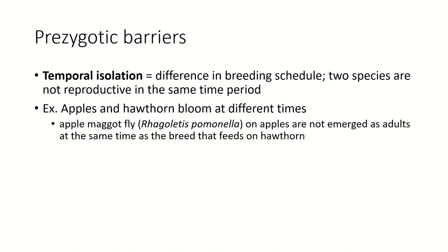The first prezygotic barrier is temporal isolation, which is a difference in breeding schedule. If you are reproductive when something else that would otherwise be in the same species is not reproductively active, then you can't breed together. The apple and hawthorn maggot flies we talked about in the last lecture are an example — apples and hawthorns bloom at different times of the year, so when some flies moved to apples, they were laying their eggs when the rest of the flies weren't reproducing. There is a temporal isolation between these two populations because they're literally reproducing at different times of the year.